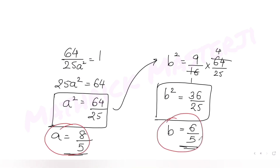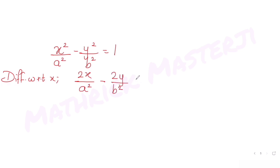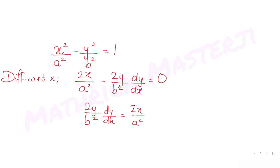Now we find the equation of the normal to the hyperbola x²/a² - y²/b² = 1. Differentiating with respect to x: 2x/a² - (2y/b²)(dy/dx) = 0. Solving, we get dy/dx = (x·b²)/(y·a²), which is the slope of the tangent.